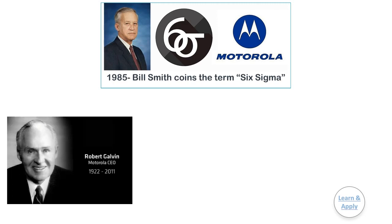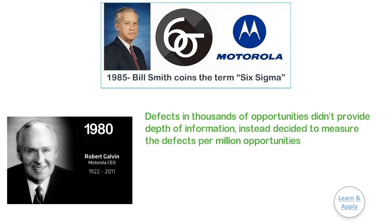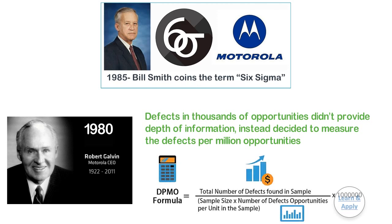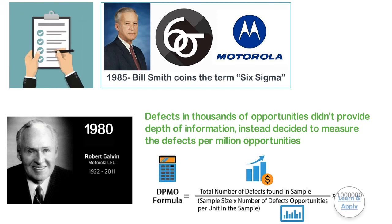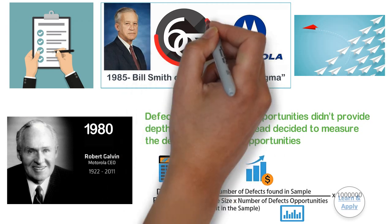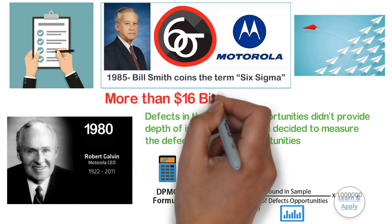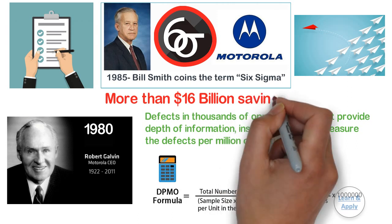In the early and mid-1980s, with Chairman Bob Galvin at the helm, Motorola engineers decided that the traditional quality levels — measuring defects in thousands of opportunities — didn't provide enough granularity. Instead, they wanted to measure defects per million opportunities. Motorola developed this new standard and methodology as well as the needed cultural change associated with it. There was a significant result in the bottom line of Motorola by the use of Six Sigma; in fact, they documented more than $16 billion in savings as a result of their Six Sigma efforts.